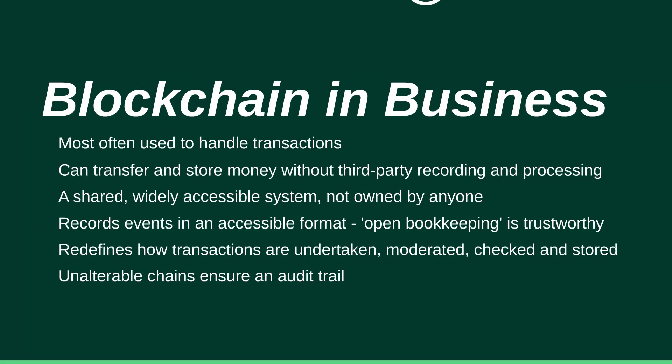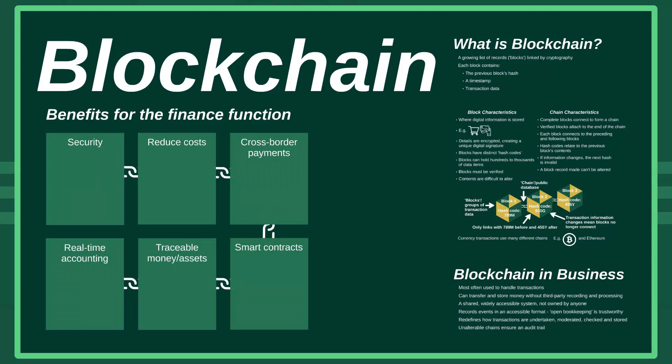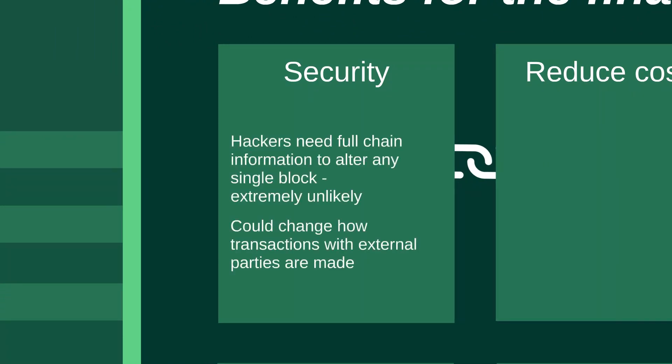Let's look at the benefits of blockchain to the finance function: security, reduced cost, cross-border payments, real-time accounting, traceable money or assets, and smart contracts. The first is security. The chain nature of blockchain means transactions are linked, and a hacker would need information on the rest of the chain to alter any block, as well as access to all copies of the blockchain in the network. Block editing is therefore extremely unlikely due to the complexity and interconnection of each block, and this added security could change how transactions with outside parties are made and recorded.